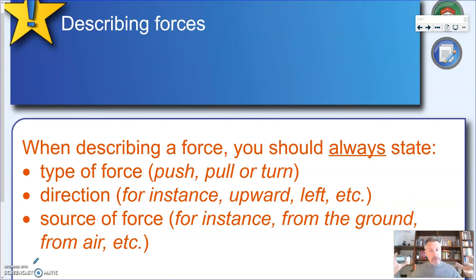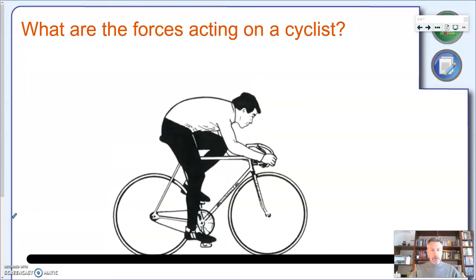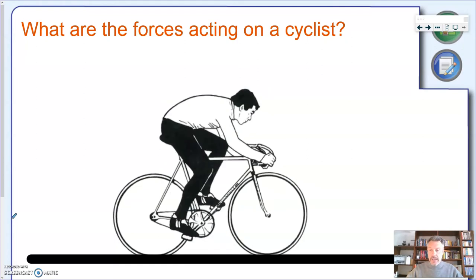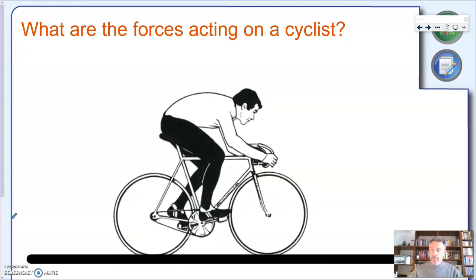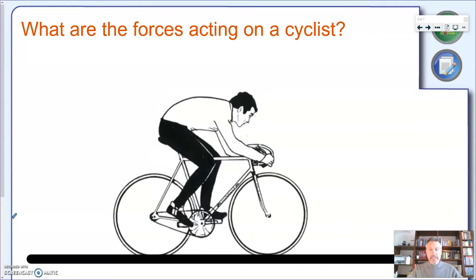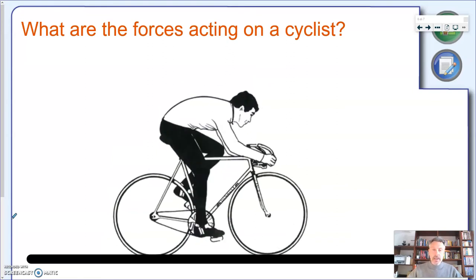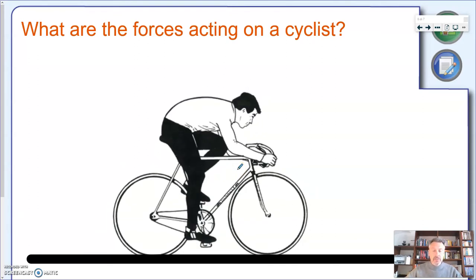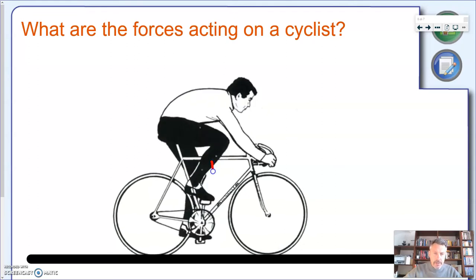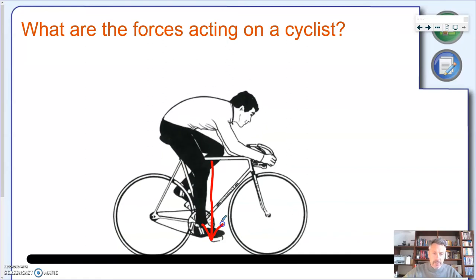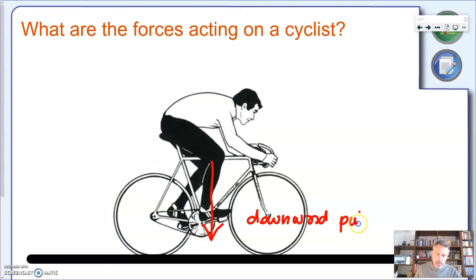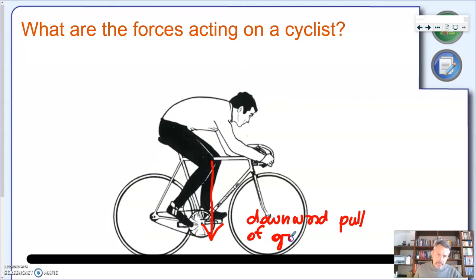Now, we have a more complex object. We have a cyclist cycling along a flat road. And we want to see what are the forces acting on the cyclist. Now, I'm going to make this very quick. But, any time, remember, you can pause the video and go back. So, let's start in the same way we did for the apple. We know that the cyclist, and when I say the cyclist, I'm talking about the whole thing, bicycle and cyclist together. And we have a force of gravity acting on them. So, I'm going to draw a nice arrow. And this will be the downward pull of gravity from Earth.